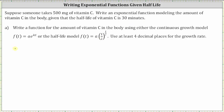Using the model f of t equals a times one-half raised to the power of t divided by c, a is the initial or starting amount, t is the time in either minutes or hours, and c is going to be the half-life time in minutes or hours.